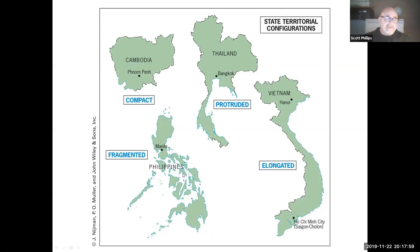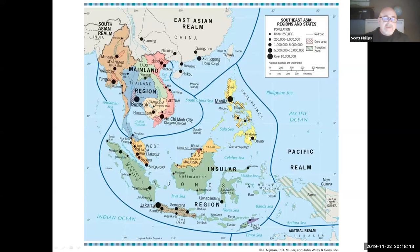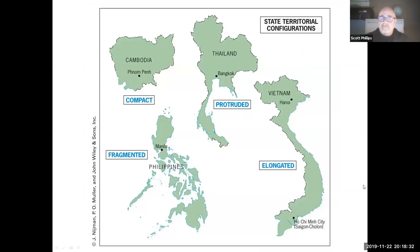Lastly, there are fragmented states. The Philippines is broken up into a number of different islands rather than one single contiguous territory, so it's considered a fragmented state. Indonesia is also a good example of a fragmented state, divided into a number of different parts on various islands. To a lesser extent, Malaysia is also a fragmented state because it exists in two parts — one on the mainland and one in the insular region.